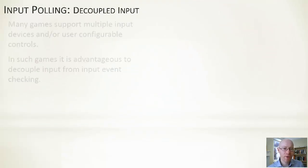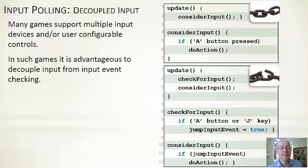Decoupled input is another way of looking at this. You see two examples on the right-hand side. The one at the top is where it's coupled together. In consider input, we say that if the A button has been pressed, then we do some action. That's fine, but it ties the two things together. The example at the bottom is a bit more flexible. Initially we check for input and then we consider that input. So in checking for input, we're asking if the A button or the J key or whatever we want to provide the user, we set some flag or variable to indicate that a certain type of input has been detected. And then we consider that.